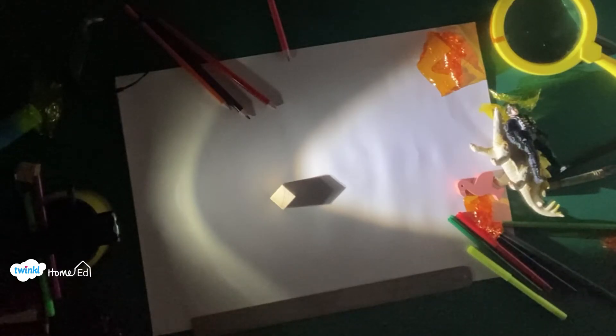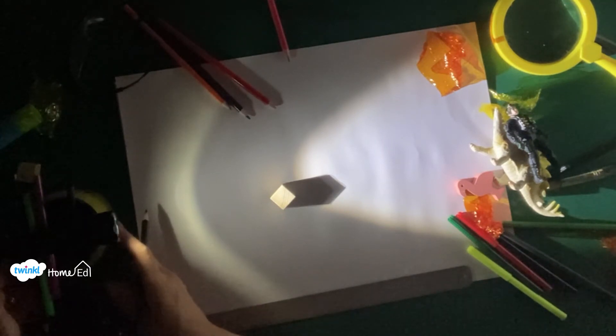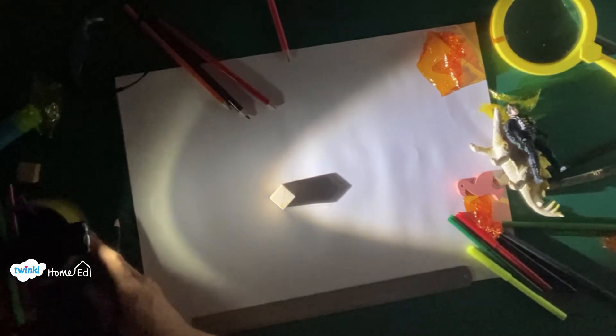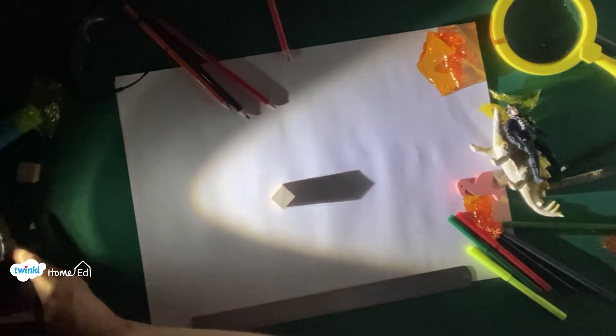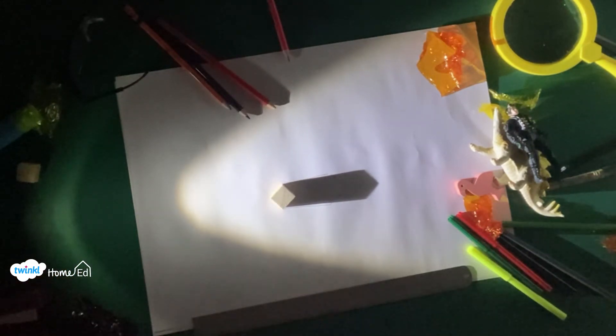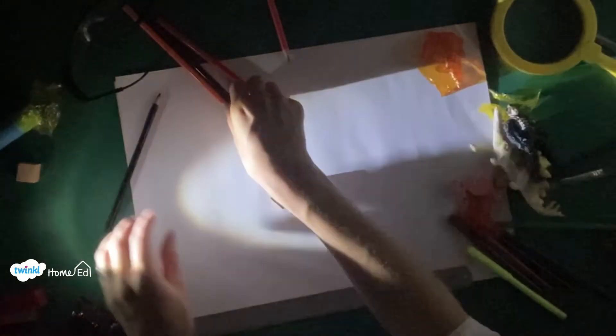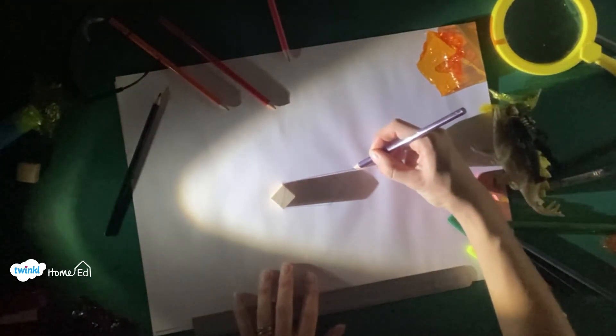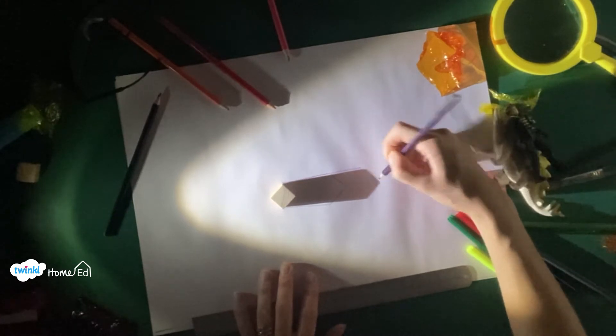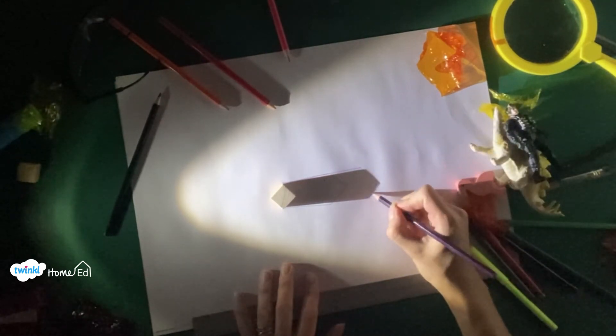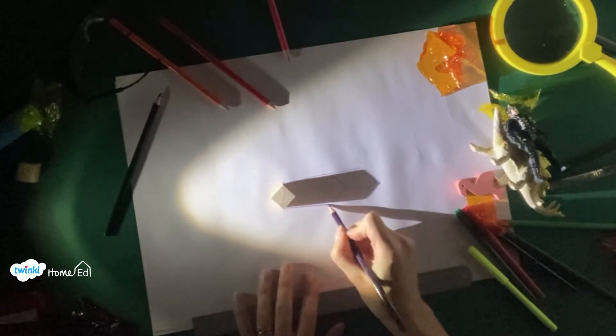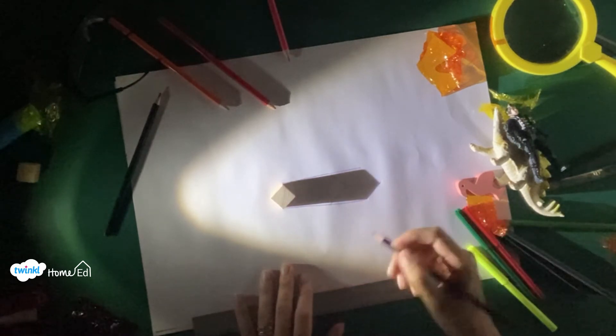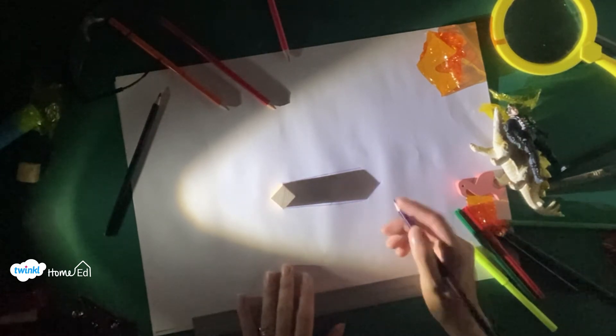In this experiment, I'm going to start by changing how far my light is from my block. So I'm going to be a bit further away, and then I'm going to use a different color pencil to draw the shadow. You can actually see how the shadow's changed. This is a great one to talk about with your children about the observations and what you can see in the experiment.